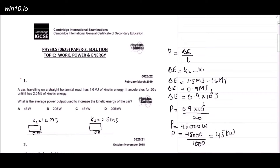This is question number one, taken from the February/March 2019 series. The question is: a car traveling on a horizontal road has 1.6 megajoules of kinetic energy. It accelerates for 20 seconds until it has 2.5 megajoules of kinetic energy. What is the average power output used to increase the kinetic energy of the car?